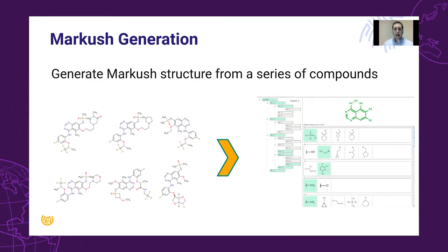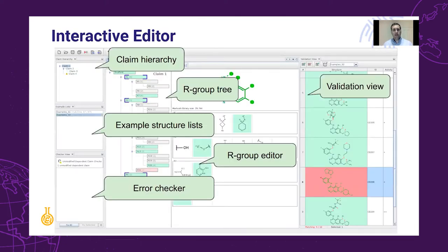Markush Editor helps you in this process. With a single click you are able to automatically identify the most meaningful scaffold — the largest common part of all your structures — and generate the list of substituents completely automatically in seconds. After that, Markush Editor offers an interactive editor, giving a safe environment to do further modifications for generalization and to build up your claim hierarchy.